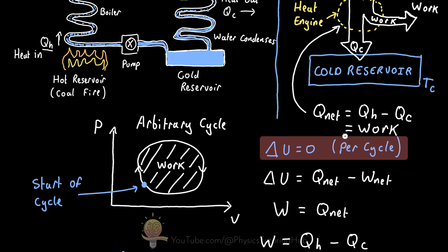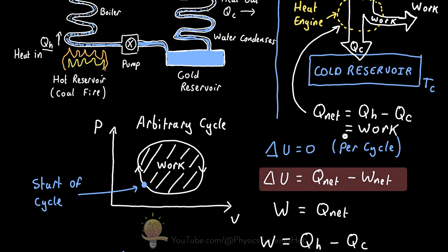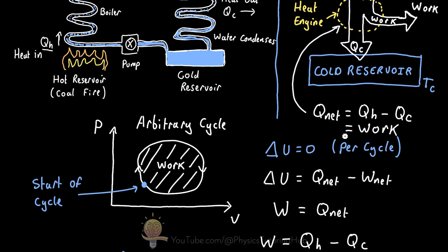With our steam engine, the water may gain energy when heated by the coal fire, but when it condenses again and gets pumped in for the next cycle, its internal energy is back to where it was at the start of the last cycle. Upon every cycle, whether the working substance is a gas or water, its internal energy does not change — every cycle it goes back to where it started. Looking at the first law of thermodynamics: the change in internal energy equals the heat transferred to the system minus the work done by the system. If the change in internal energy is zero, then the net work done by the heat engine equals the net energy transferred to it.